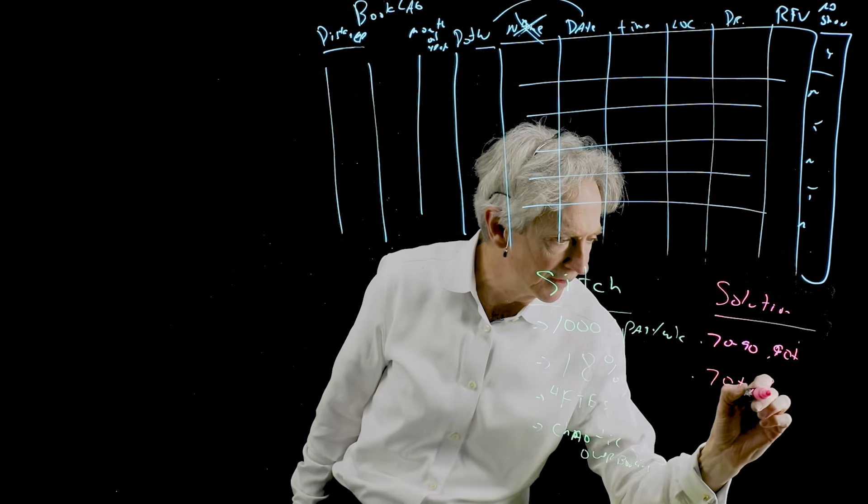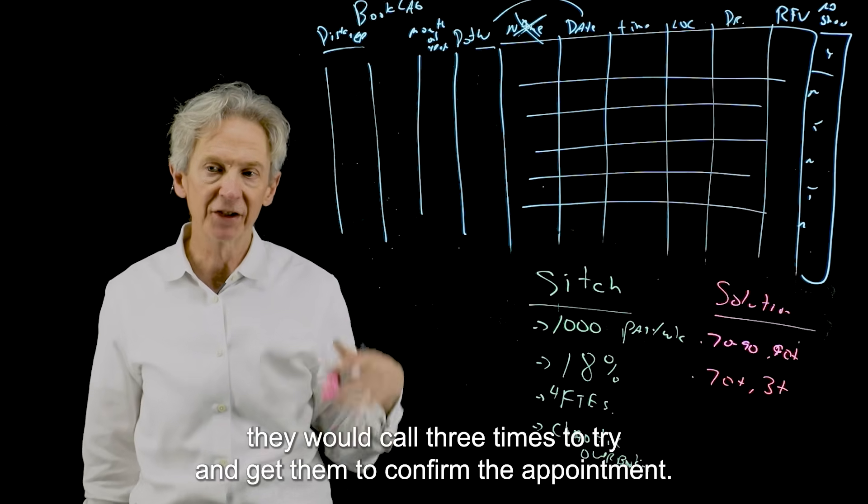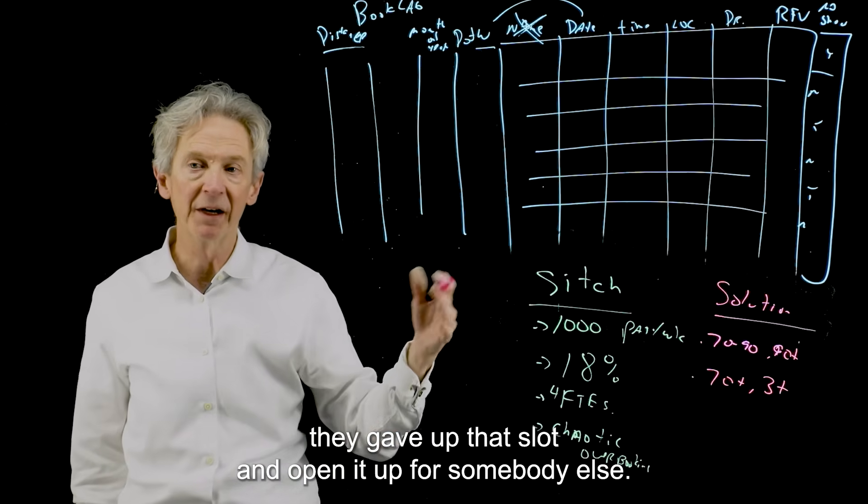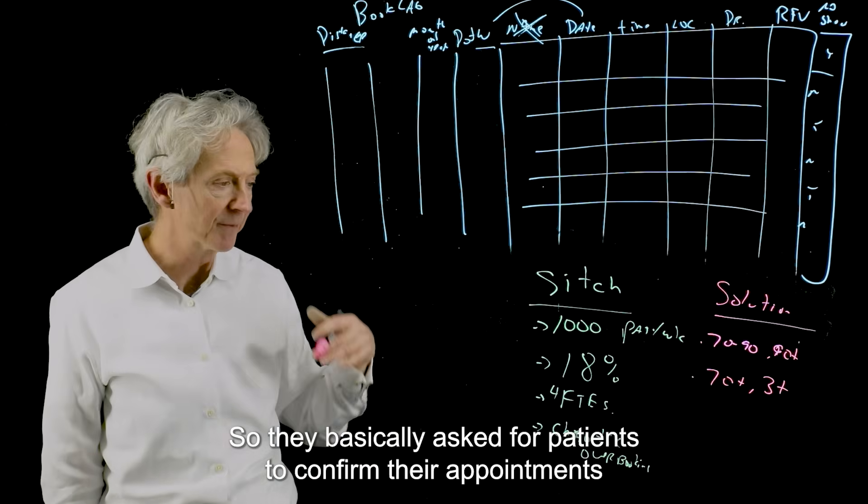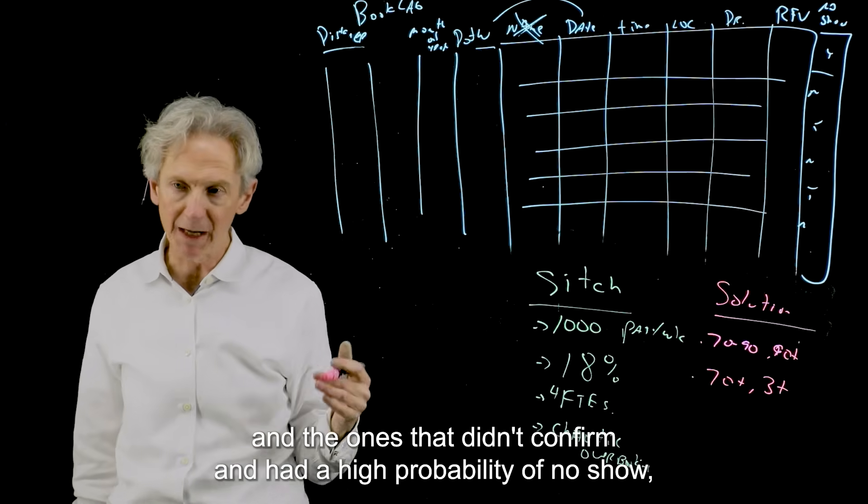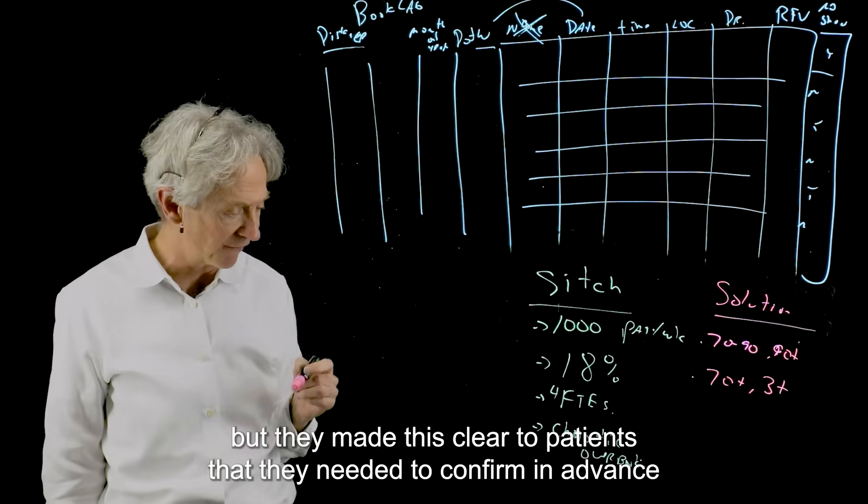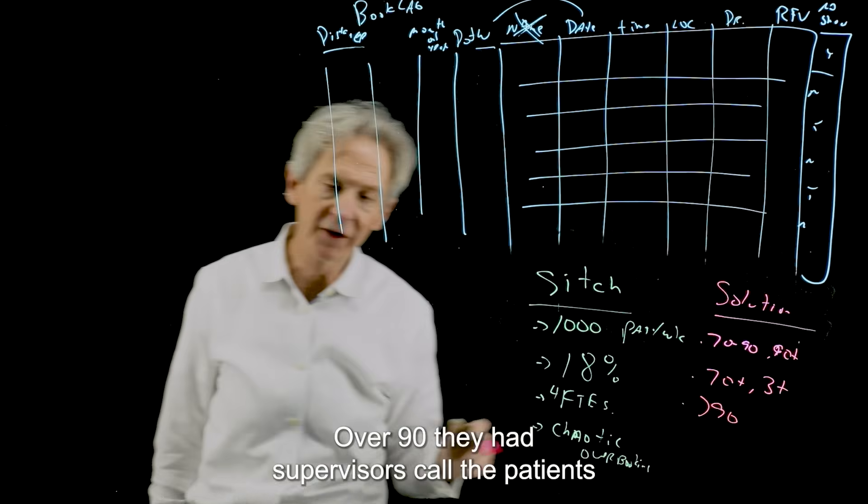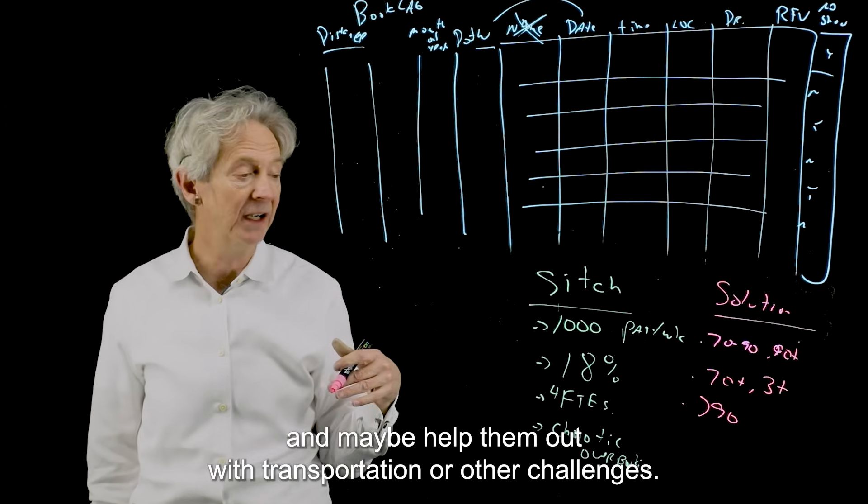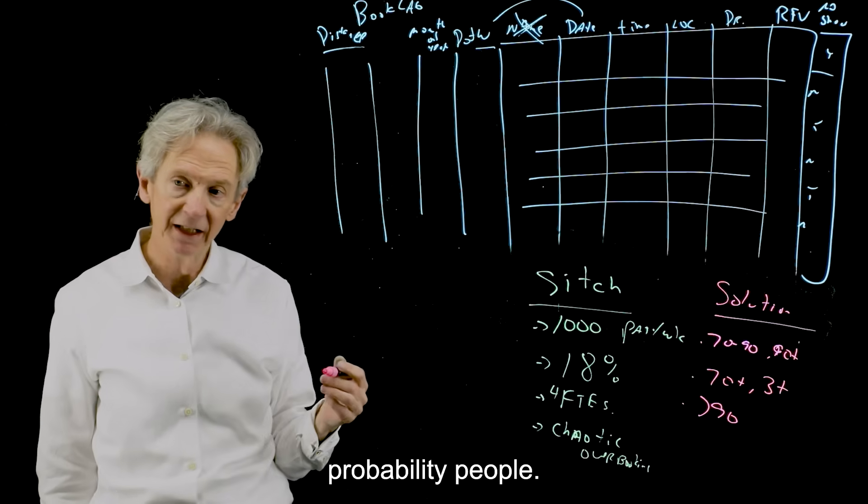The second thing is anybody over 70 plus, they would call three times to try and get them to confirm the appointment. And if they didn't confirm the appointment, they gave up that slot and open it up for somebody else. So they basically asked for patients to confirm their appointments and the ones that didn't confirm and had a high probability of no show, they gave the slot to somebody else. Sounds a little mean, but they made this clear to patients that they needed to confirm in advance. Over 90, they had supervisors call the patients and maybe help them out with transportation or other challenges they may have making the appointment. So they made extra effort on the over 90% probability people.